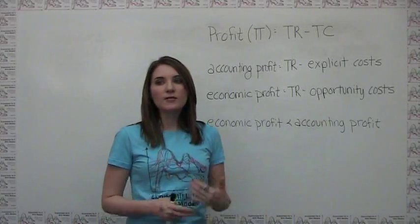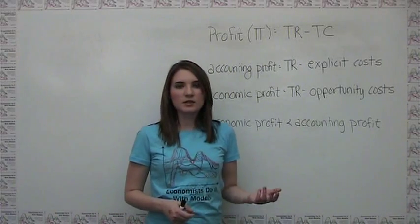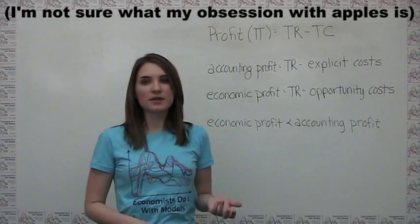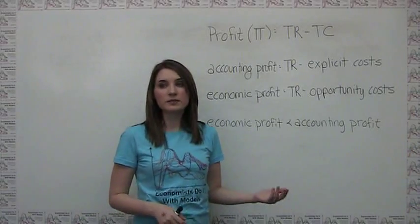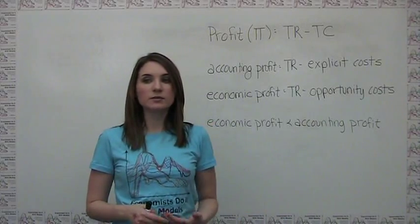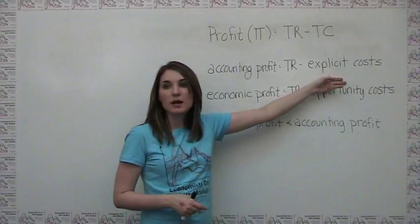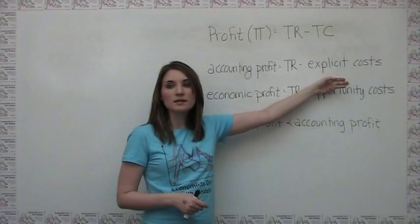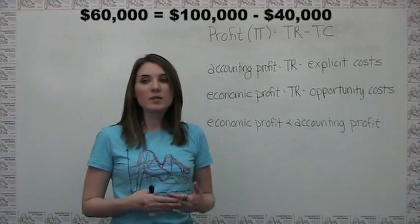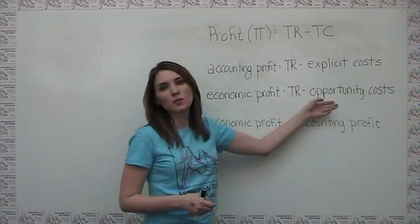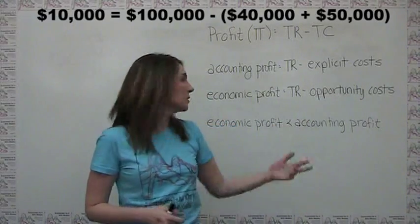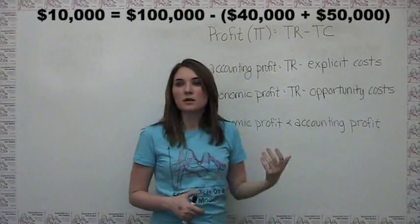For example, if I were to give up a $50,000 a year job in order to farm apples for a living, I would have an opportunity cost of $50,000 that accounting profit ignores. So if I took in $100,000 per year in revenue and had $40,000 in explicit costs, my accounting profit would be $60,000, but my economic profit would only be $10,000, because it also counts the $50,000 a year I gave up as a cost of a foregone alternative.